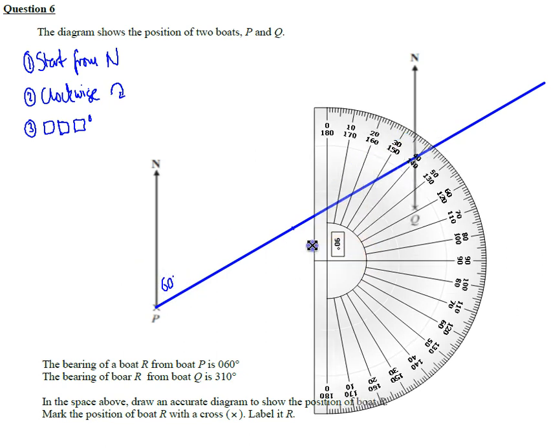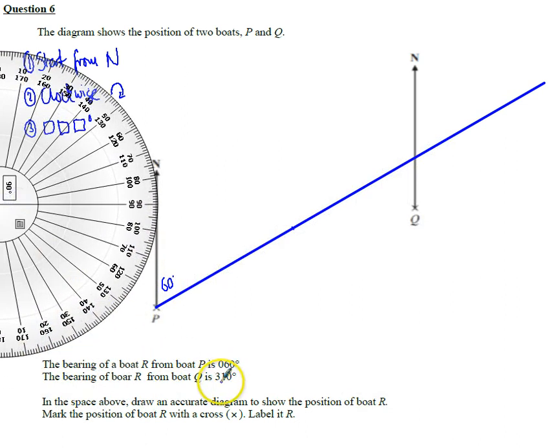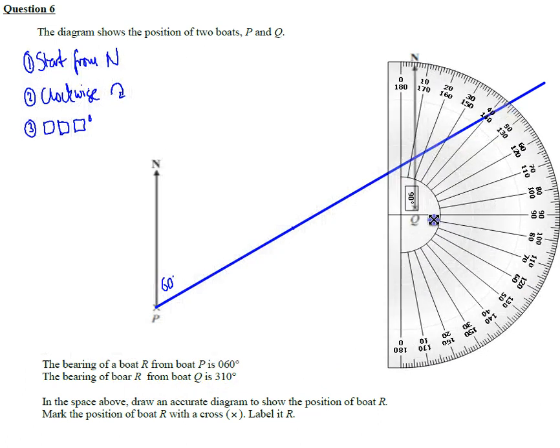Now it also says that the bearing of boat, it says boar but I think it means boat, it doesn't mean a wild pig. So the bearing of boat R is 310.